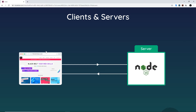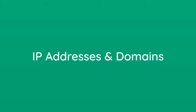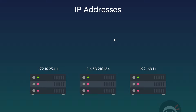When we type a web address or domain name into the browser, how does the browser know to send a request to the correct server? There are probably millions of servers powering millions of different websites on the internet, but somehow the browser magically knows to connect to the correct one. To answer that, we need to know a little bit about IP addresses.